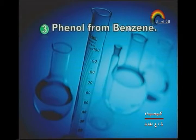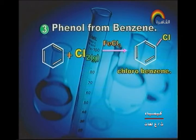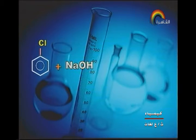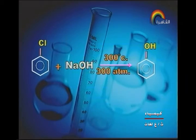Next point: phenol from benzene. As the equation proceeds on screen: benzene reacts with chlorine in the presence of iron(III) chloride giving chlorobenzene and HCl gas. Then chlorobenzene on alkaline hydrolysis with sodium hydroxide at 300°C and 300 atmospheric pressure gives phenol and releases sodium chloride.